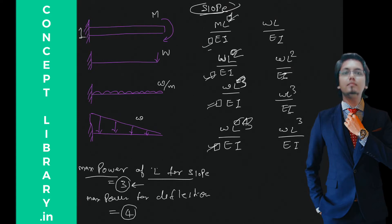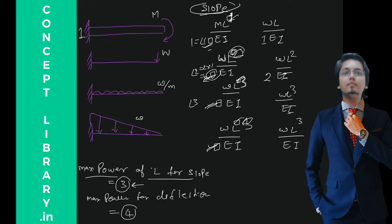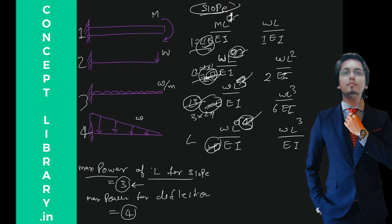Now for the coefficients, the trick is very easy: take the factorial of the same power. Power is 1, so factorial 1 = 1. Power is 2, so factorial 2 = 2×1 = 2. Factorial 3 = 3×2×1 = 6. Factorial 4 = 4×3×2×1 = 24. So the denominators for slope are 1·EI, 2·EI, 6·EI, and 24·EI. Slope trick is done.